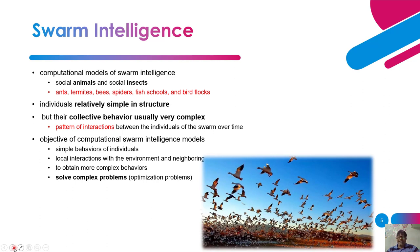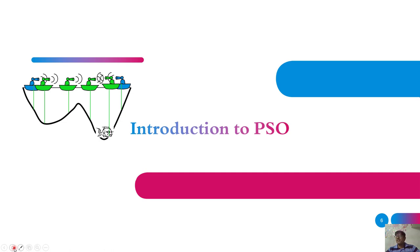The pattern of interaction between individuals of the swarm over time is very important. The objective of computational swarm intelligence models: first, identify and model these simple behaviors of individuals; then identify the local interactions with the environment and neighboring agents; and by that we can obtain more complex behaviors. From these three, it's possible for us to solve any complex optimization problem.